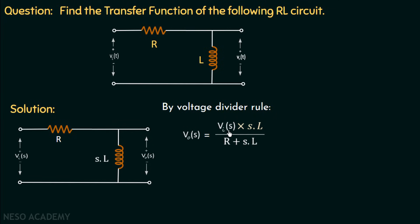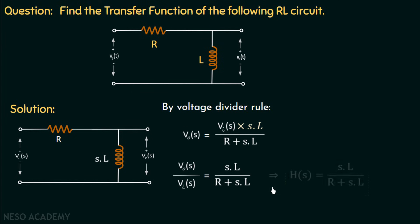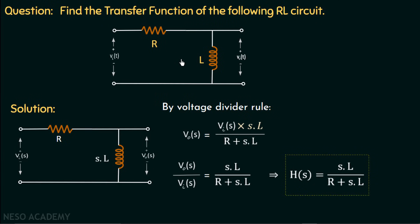Transposing Vi(s) to the left-hand side, we get the transfer function H(s) equals Vout(s) over Vi(s), which is equal to SL over R plus SL. So the transfer function for this RL circuit is SL over R plus SL. We are now done with the transfer function calculation and will compare the two RL circuits discussed in the previous lecture and this lecture.